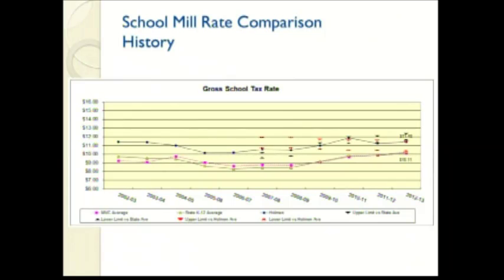Last year we were at $11.40 and the MVC and state average were both at $10.11, so we have a tax rate that runs consistently higher because of the debt. The arrows on this chart illustrate where the targets are — one comparing the school district to the state average, and the other representing upper and lower limits based on our historical average. The intent of this goal is to avoid dramatic fluctuations in the tax rate from one year to the next, as people tend to appreciate stability.